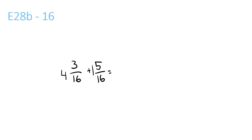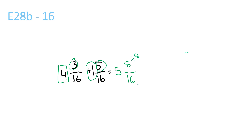Last question. 4 plus 1 is 5. Then 3 plus 5 is 8 over 16. 8 and 16 can both be divided by 8, so it's 5 and 1 over 2.